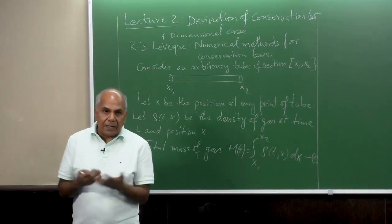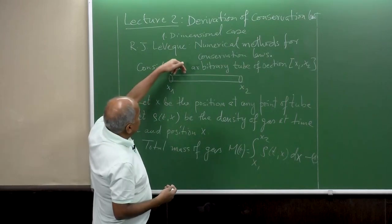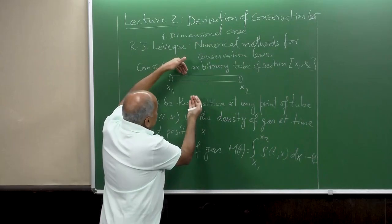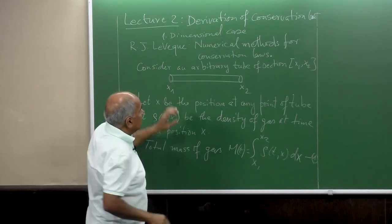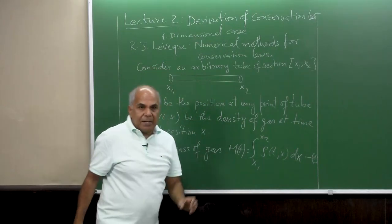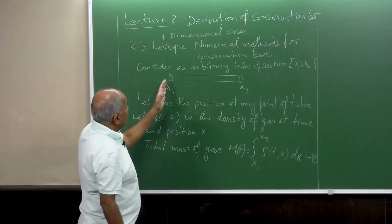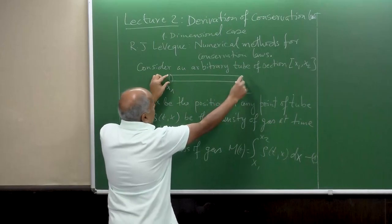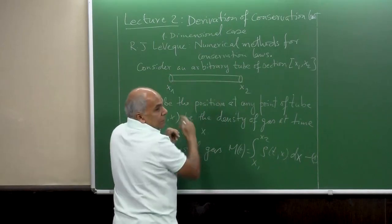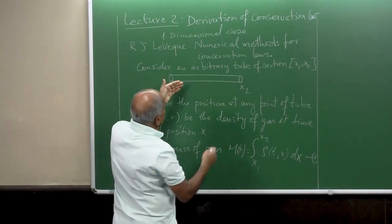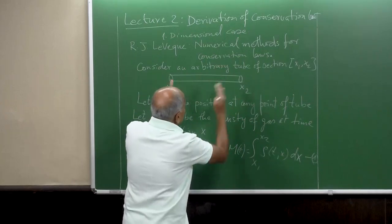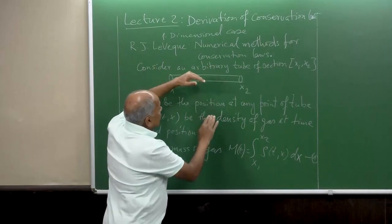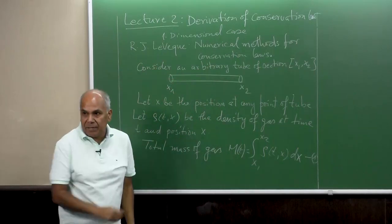We assume that there is no creation of the gas through the wall — neither creation nor destruction. It means the wall is impermeable. So the change of mass happens only across the endpoints x1 and x2 — whatever goes in or goes out. The wall is totally impermeable.